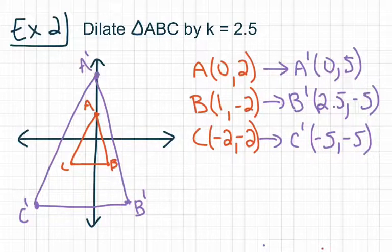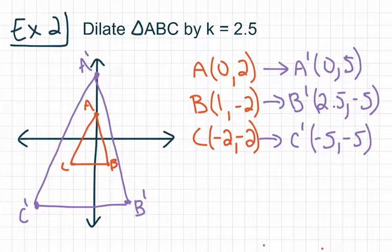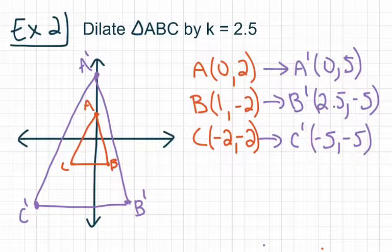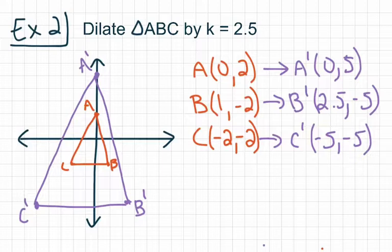In Example 2, we saw that was an enlargement because our prime image got bigger than the original. For Example 3, we'll look at a reduction in which our image is going to be smaller than our original figure.